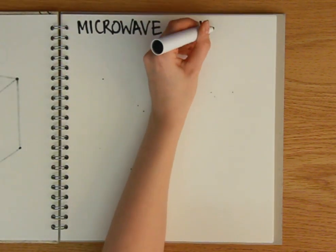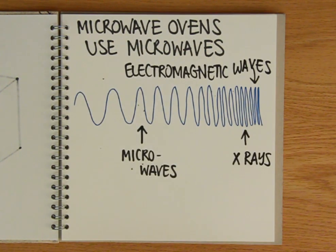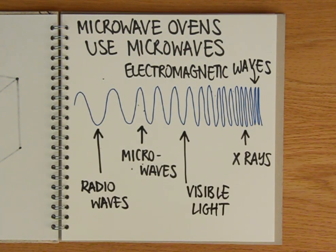Microwave ovens heat up food using microwaves, which are one type of electromagnetic radiation, like X-rays, radio waves, and the visible light that we can see.